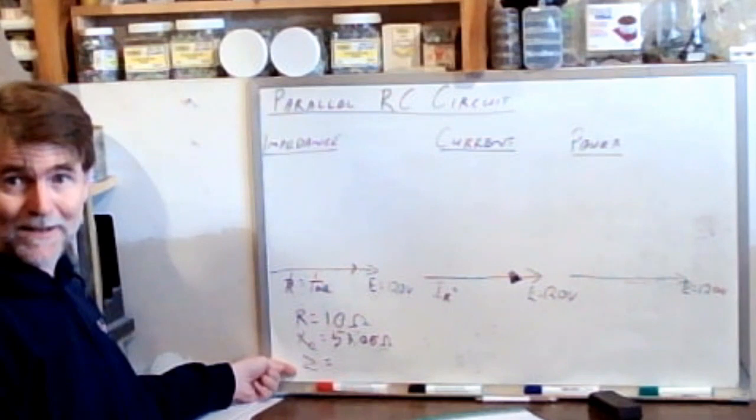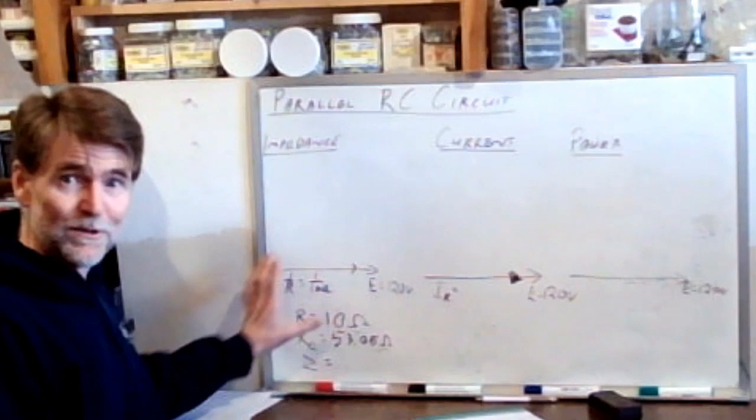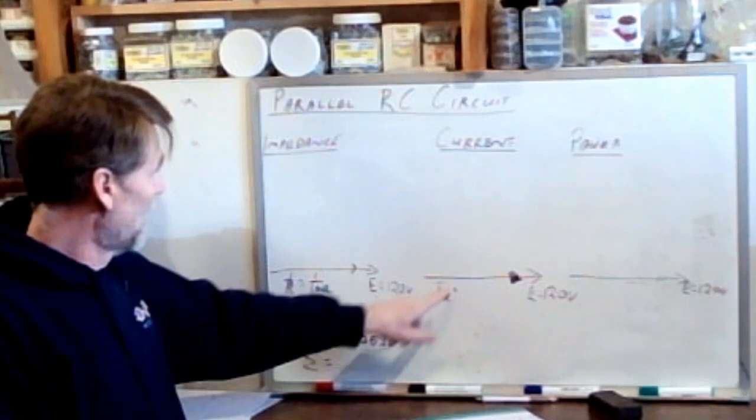Can we find Z? Not yet. We could if we did the triangle, we could calculate the hypotenuse would be the inverse of Z. From there we could find Z. But there's a much easier way to do this, which is just get away from the impedance triangle. And let's work in the current triangle.